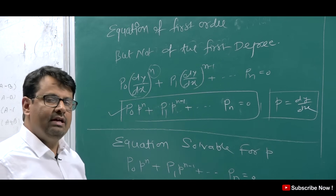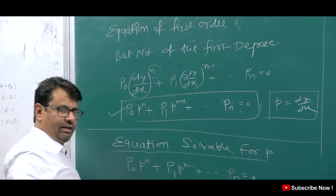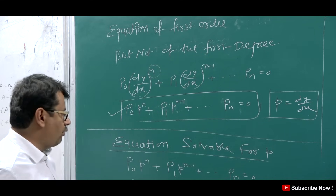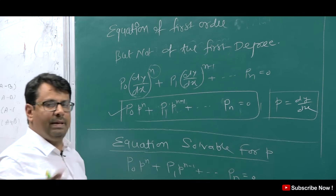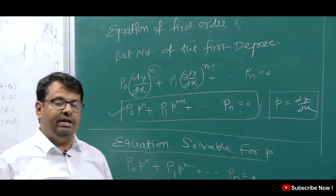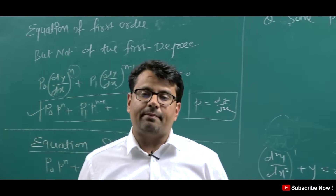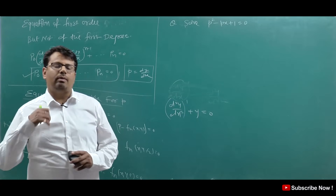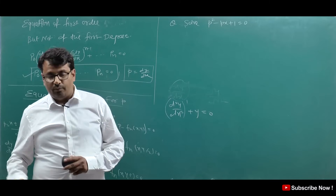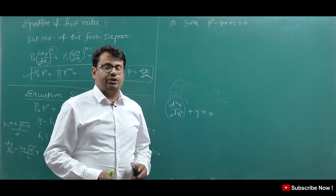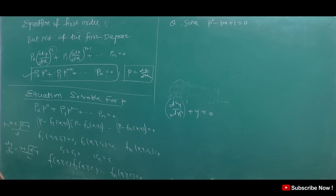To solve this type of equation we have four methods. In this video I am going to discuss the method: equation solvable for p. When do we use the equation solvable for p? You may have confusion about how to know which method to use — solvable for p, solvable for x, solvable for y, or Clairaut's form. You have to understand the type of question.